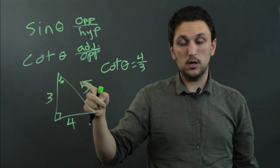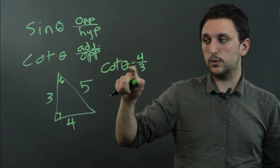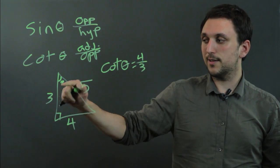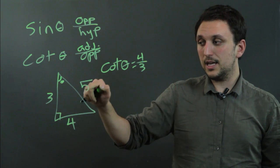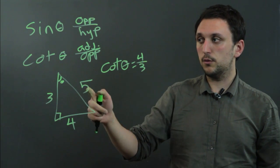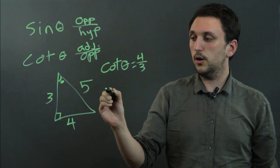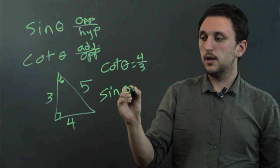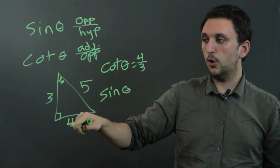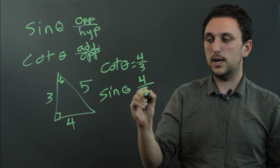And if we didn't know 5, for example, if all we knew was cotangent theta is 4 over 3, we could say 3 squared plus 4 squared equals 5 squared, so the hypotenuse is 5. So then the sine theta is opposite over hypotenuse, so it's going to be 4 over 5.